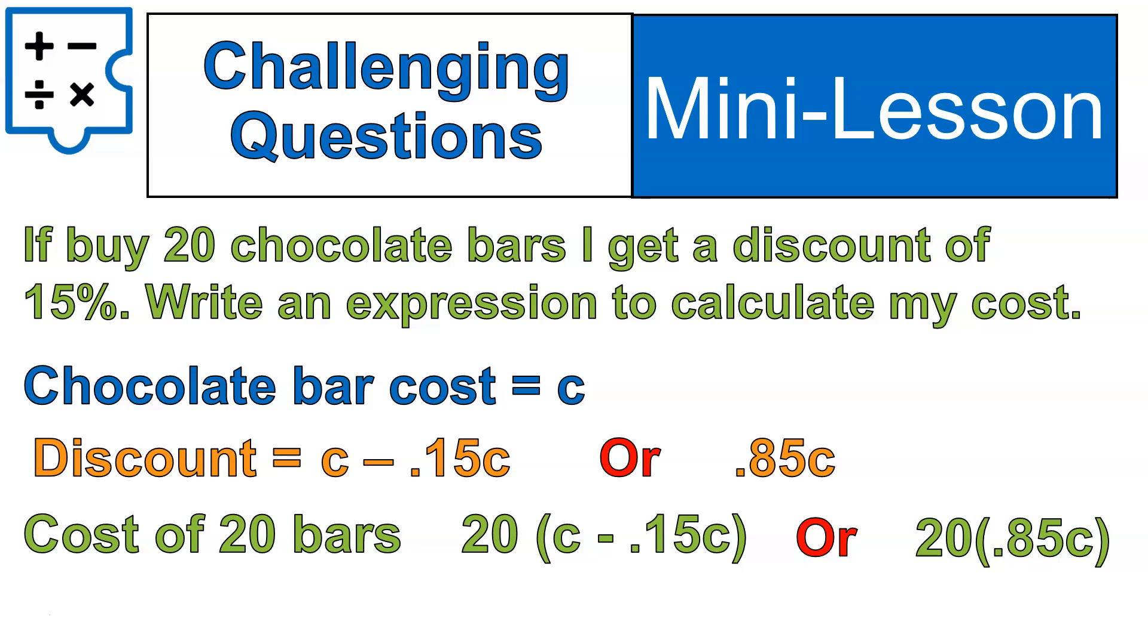Now, I do have to take into consideration that to get this discount, I have to buy 20 chocolate bars. So I'm going to be multiplying 20 times that cost, which is the cost minus the discount. Or I can write it out as this, 20 times 0.85 of the cost of the chocolate bar. And because everything in this has numbers, you can actually simplify it down to 17C. What that means, basically, is that if you are getting this discount, you're basically paying the cost, the regular cost, of 17 chocolate bars. That's what this says, 17C. But that doesn't even matter. Both of these expressions at the end work for writing an expression to calculate your cost. I probably wouldn't simplify it down to 17C. That's just showing off.